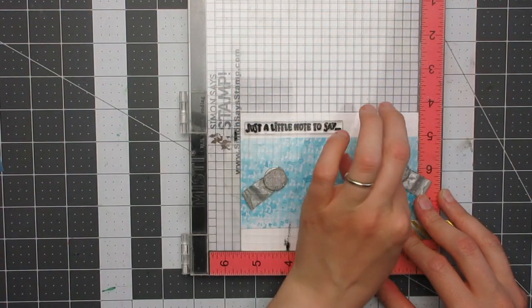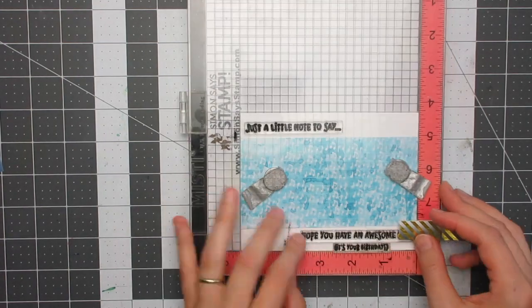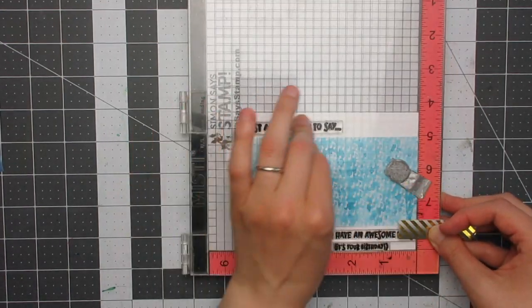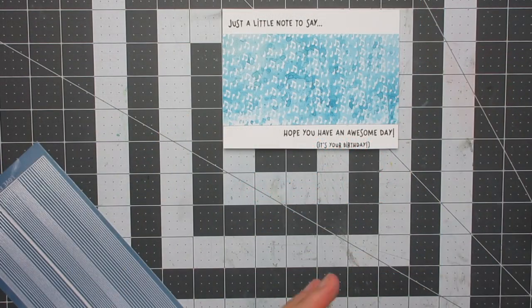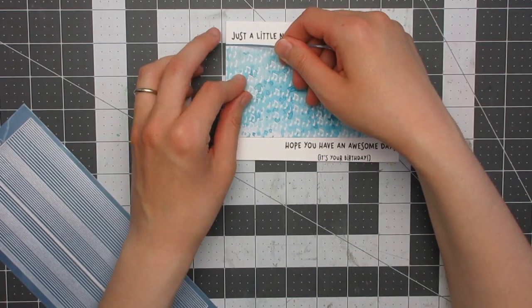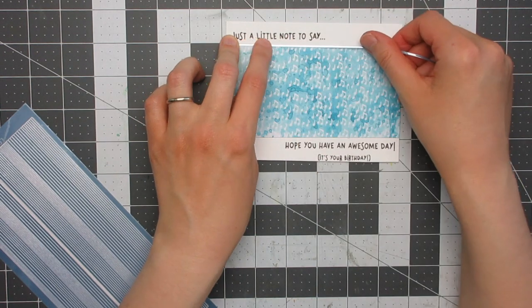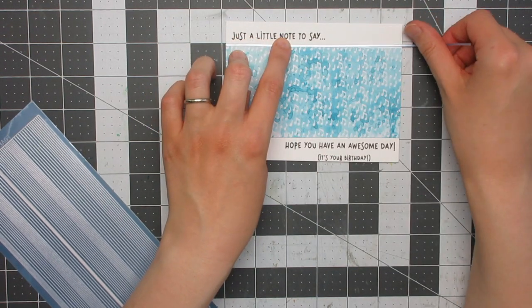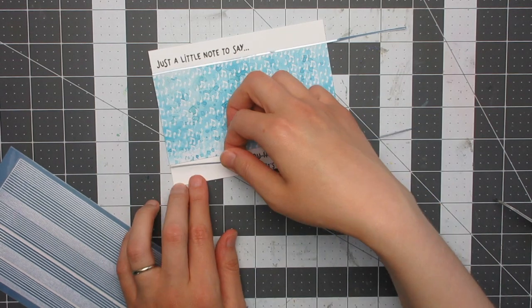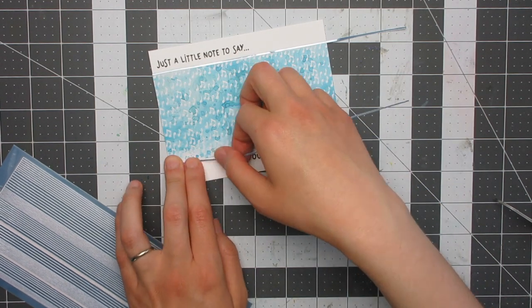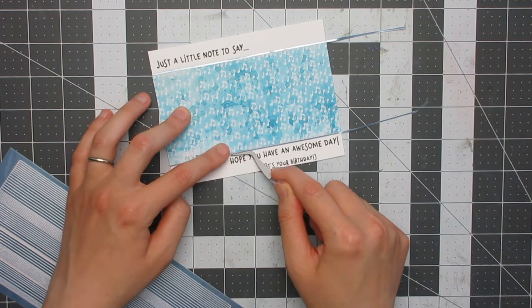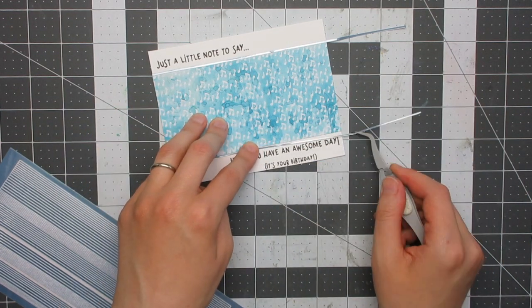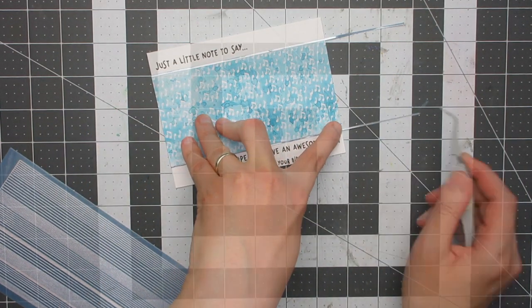Once I had finished all the smooshing and so on, I trimmed the panel down and adhered it to my card base. Then I used Versafine Onyx Black ink to stamp my sentiments on. I stamped all three of the sentiment stamps that I'd chosen at once. In hindsight, I probably would have used the It's Your Birthday one separately so that I could have moved it up a little bit, but I don't think it matters too much.